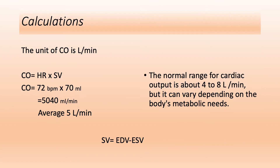The normal unit of cardiac output is liters per minute. If a person has a heart rate of 72 beats per minute and a stroke volume of 70 milliliters, the cardiac output is 5,040 milliliters per minute, which equals approximately 5 liters per minute. That means that person's heart sends 5 liters of blood every minute. We said the normal range of cardiac output is 4 to 8 liters per minute, and it can vary depending on the body's metabolic needs.